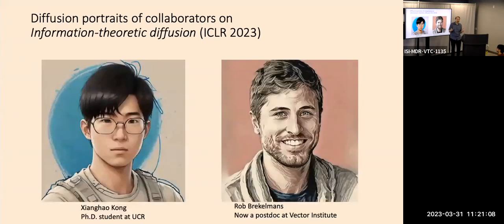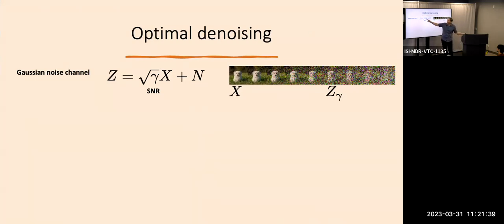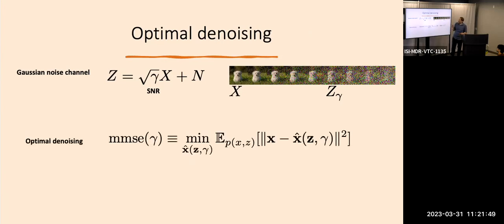So these are the diffusion-created portraits of my collaborators on this. Rob Breckleman — many of you probably know — is now at Vector Institute. The primary mathematical object we consider is something that sounds pretty boring: Gaussian noise channels. There's some image X and we add various amounts of Gaussian noise to it. The amount of noise is controlled by a parameter I'm calling gamma, which is the signal-to-noise ratio. That's a very simple object.